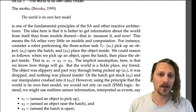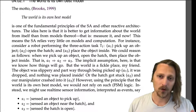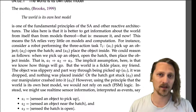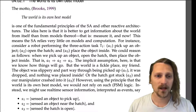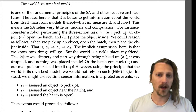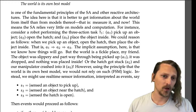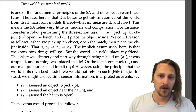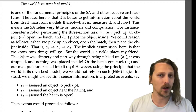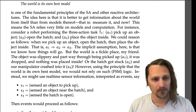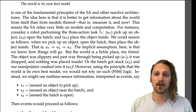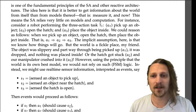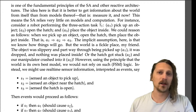Consider a robot performing the three-action task T1: A1 — pick up an object; A2 — open the hatch; A3 — place the object inside. We could reason: when we pick up an object, open the hatch, then place the object inside. But the world is a fickle place — the object could be slippery and dropped partway through A1, or the hatch could get stuck during A2 and our manipulator would crash into it in A3.